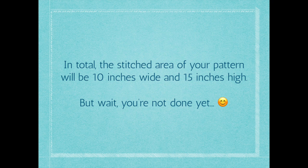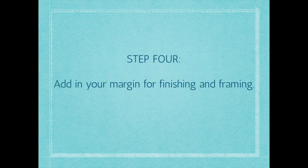So obviously there's one more little step — you're not quite done yet. Step four is you have to add in your margin for finishing and framing. This means your blank fabric on all sides — you need enough margin. Because if you don't have enough margin, you're not going to be able to finish your project properly, you're not going to be able to stretch it for framing or put it in a hoop properly. That margin also gives you some leeway if you go a little bit off center when you start your stitching project.